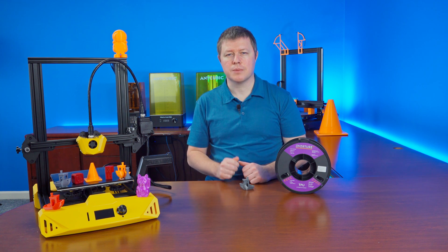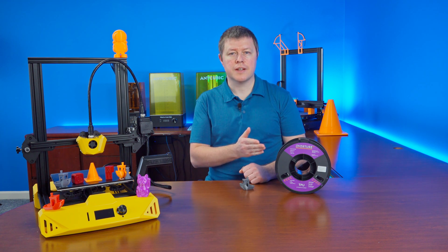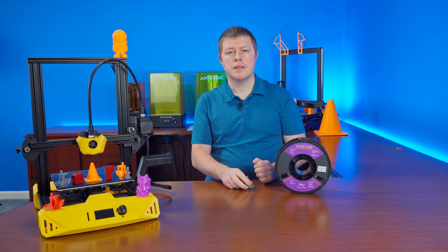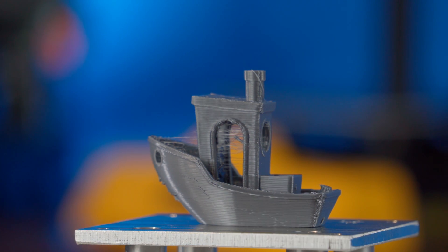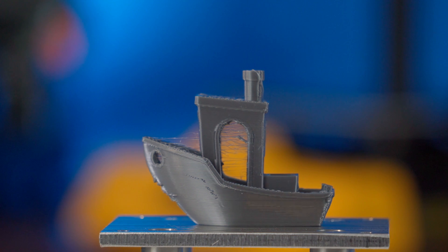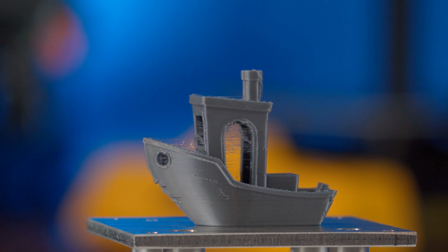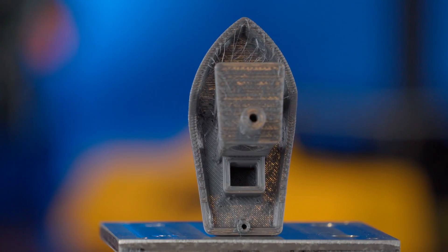Alright, time to really test the boundaries with an extreme challenge, this super flexible TPU from Overture. And this is the result. Although the Benchy did successfully finish, it's not what I would call a good Benchy. The vertical surfaces look alright, but it really struggled on the overhang of the bow, in the cabin, and on the top surface.